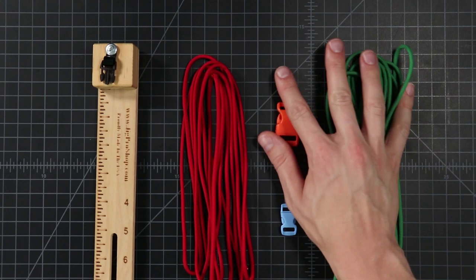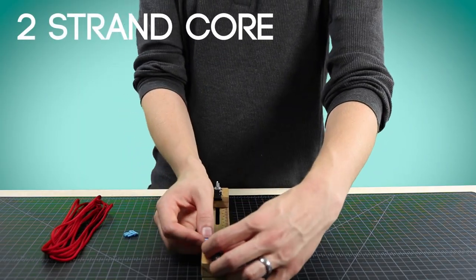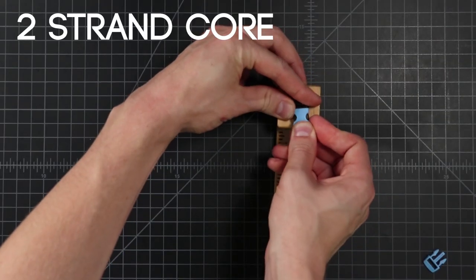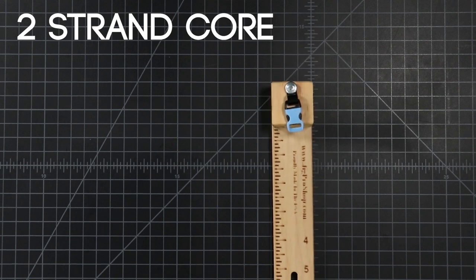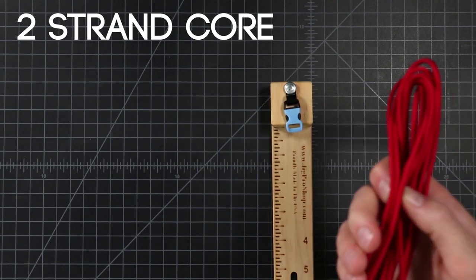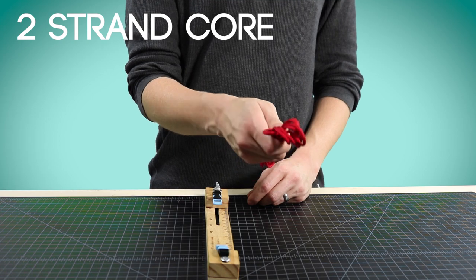So to start off go ahead and clip your buckle into the jig. Most beginner weaves require about 10 feet of paracord until you get into the wider ones. They require more.